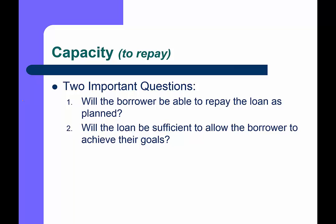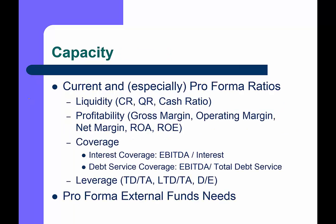Capacity is where finance people with their numbers come into play. There are two key questions: will the borrower be able to repay the loan, and is the loan amount sufficient? If the loan isn't enough and the company still struggles after receiving it, the bank doesn't want to be involved. We look at liquidity ratios — current ratio, quick ratio, cash ratio — and profitability measures including gross margin, operating margin, net margin, return on assets, and return on equity.